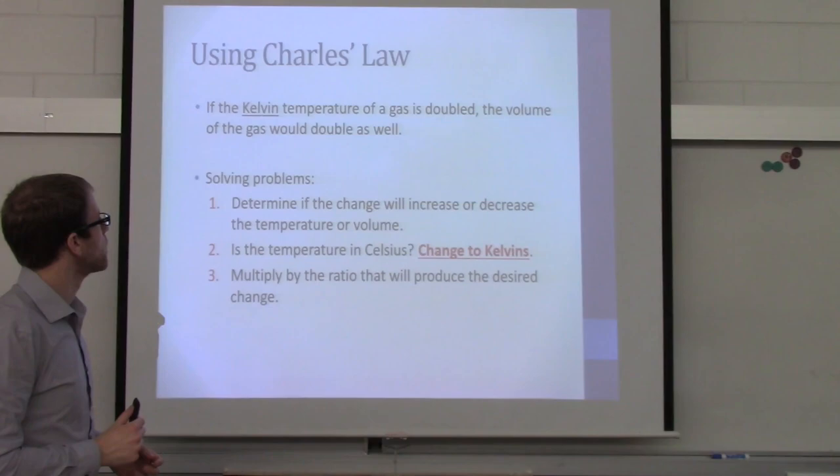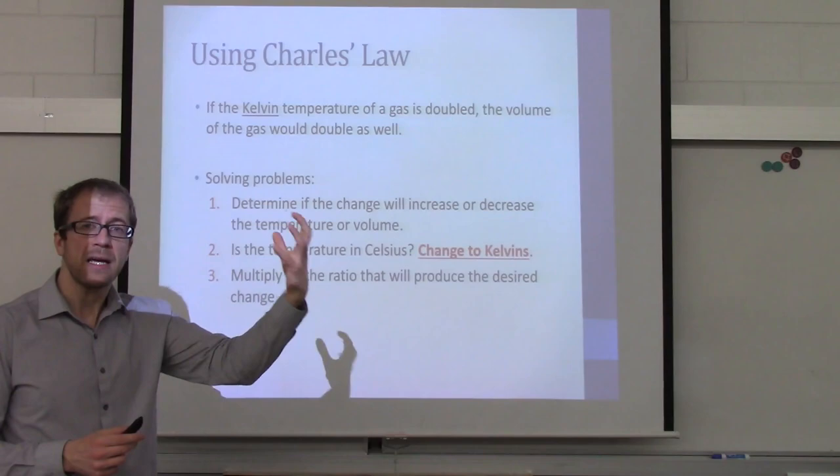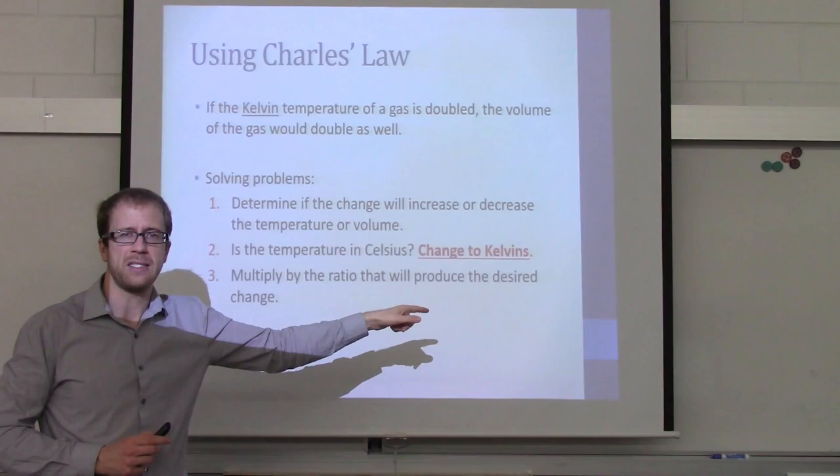So what are the steps you're going to use to solve these problems? You're going to use a similar strategy to Boyle's Law — predict, then multiply by the correct ratio. But there's one more step: always check whether the temperature is in Celsius. If it is, you must convert that temperature to Kelvin.